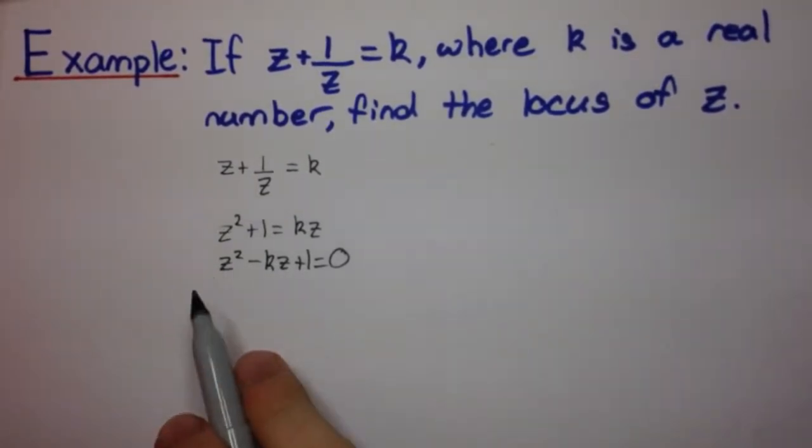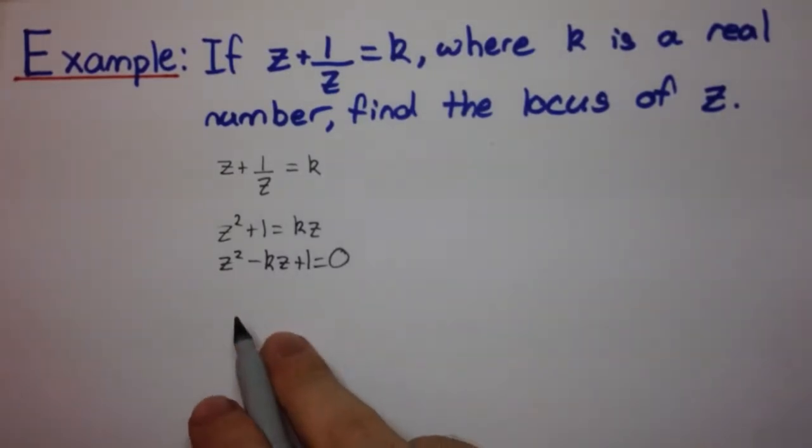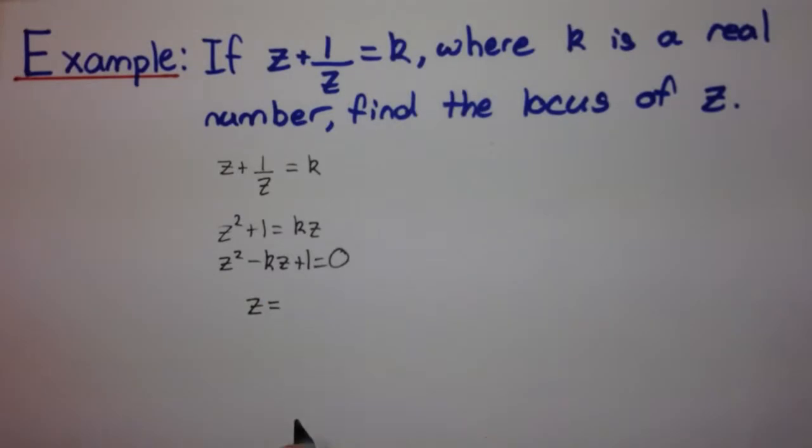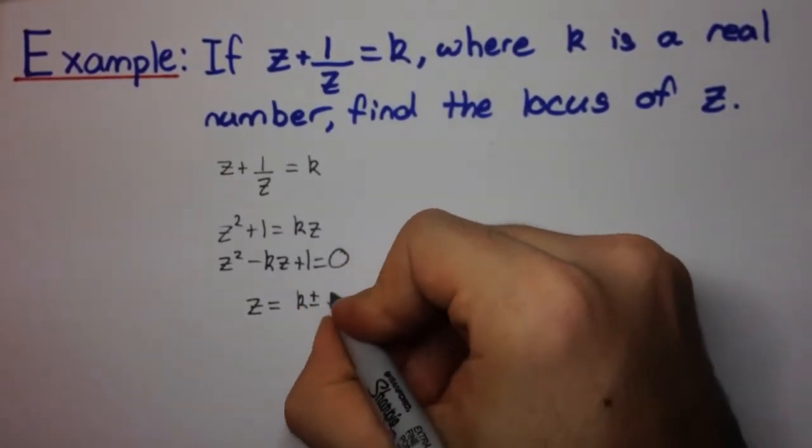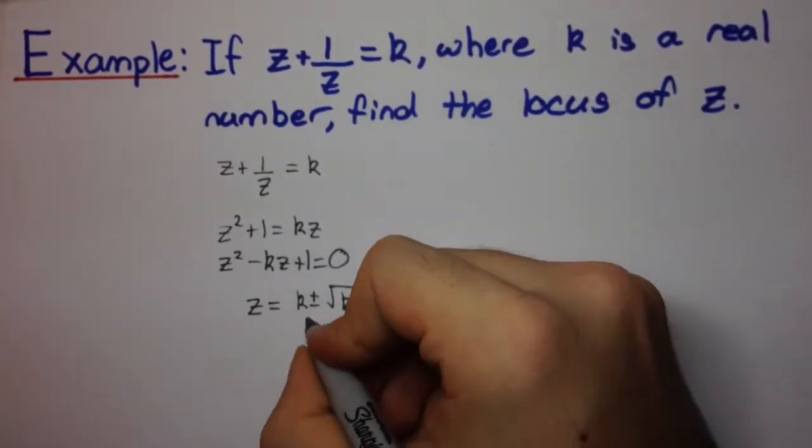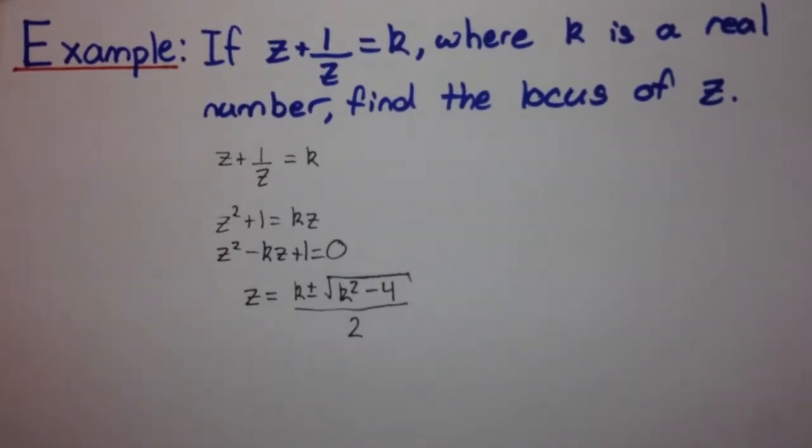Okay, now we want to have z equals some expression. So we can apply the quadratic formula to get z equals k plus or minus the square root of k squared minus 4 all over 2. Okay, so we know that z equals this expression, but we have two different cases.